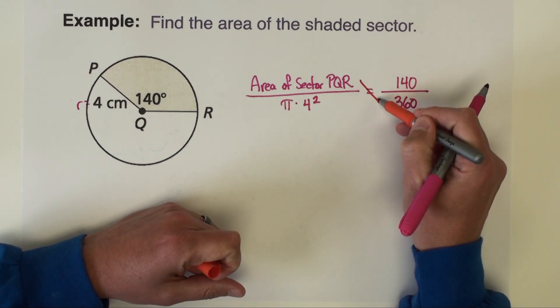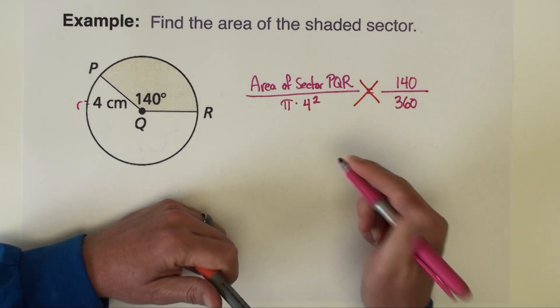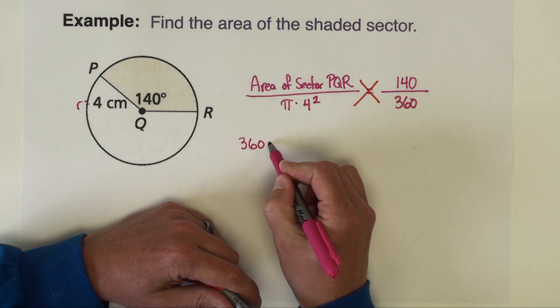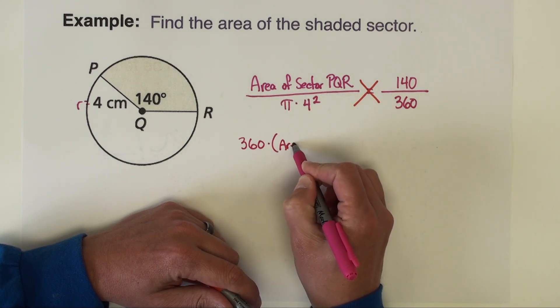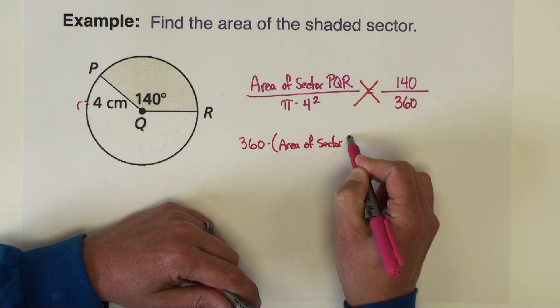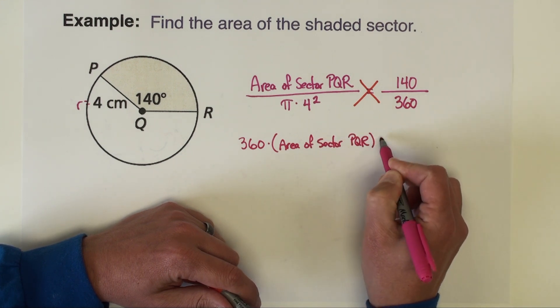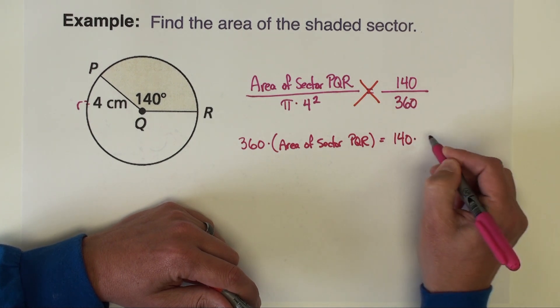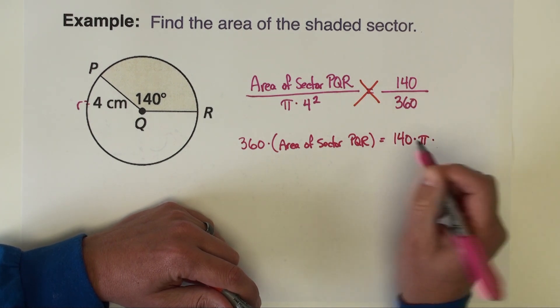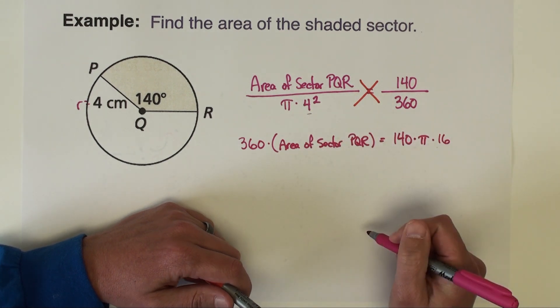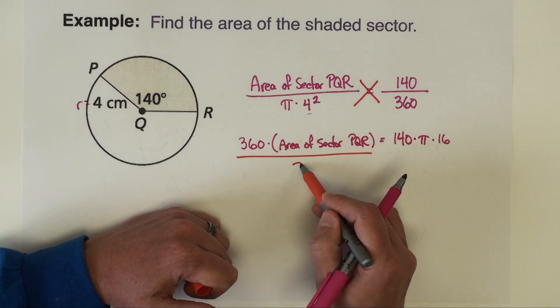So we're going to have 360 times the area of sector PQR equals, and I'm going to have 140 times pi times, I'm just going to change 4 squared to 16. We'll divide by 360.